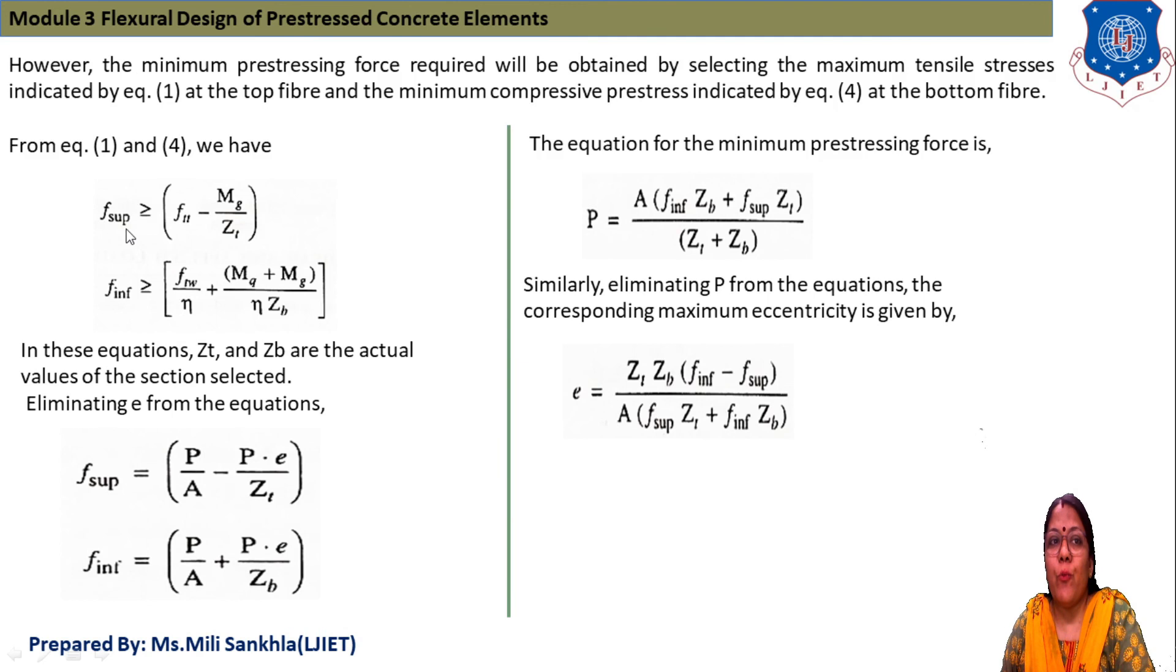Equations 1 and 4: F_sup ≥ FTT + MG/ZT. This is for moment due to dead load. F_sup is top stress and F_inf is bottom stress. Bottom stress is ≥ FTW/η + (MQ + MG)/(η×ZB). This is the equation for analysis and design for flexure.